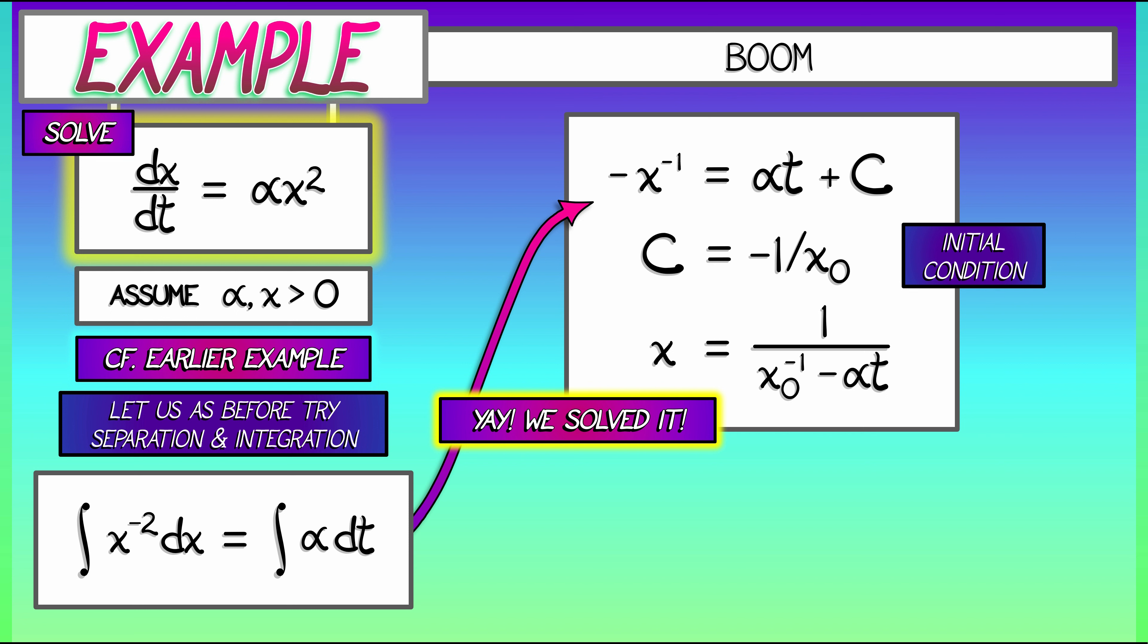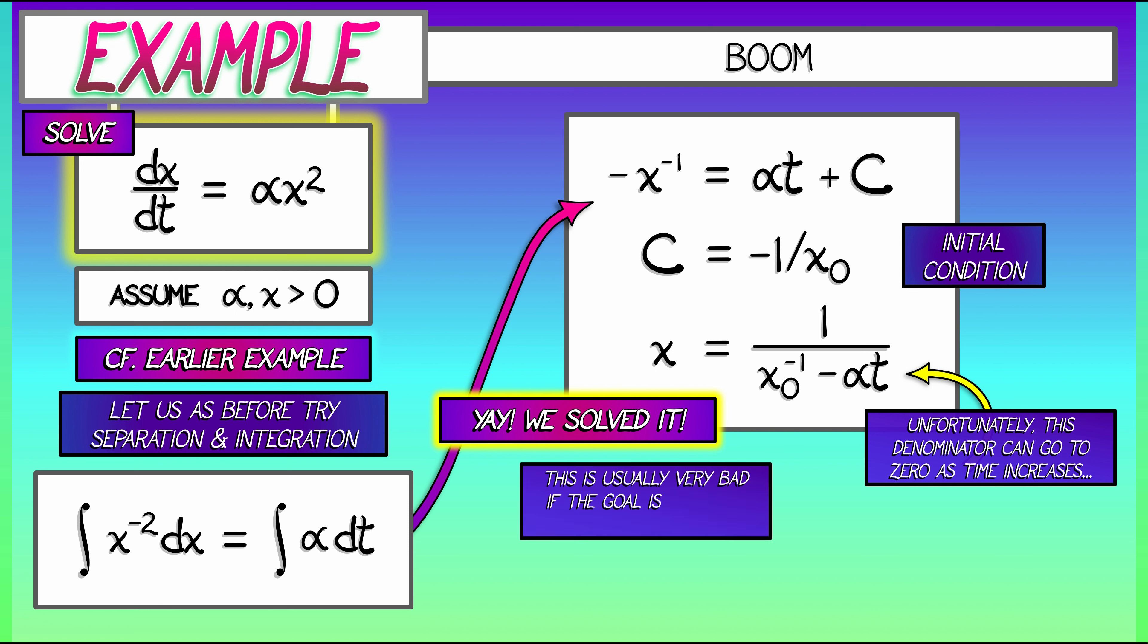We said that alpha was positive, right? We said that x was positive, and hence the initial condition x0 is positive, right? Also right. I'm dividing by something that makes me a little nervous, as it should, because that denominator goes to 0 as time increases. And at a finite time, that denominator goes to 0 and x goes to infinity. And past that, the solution does not exist. This is bad. This is very bad.